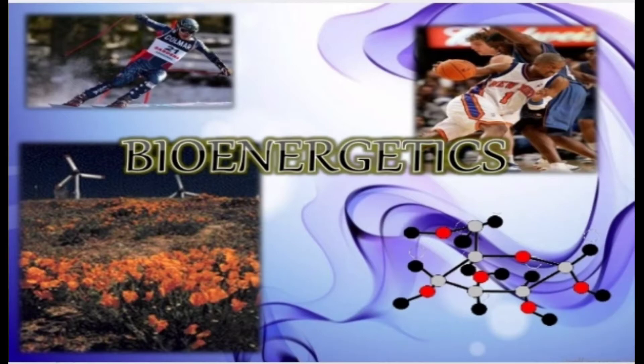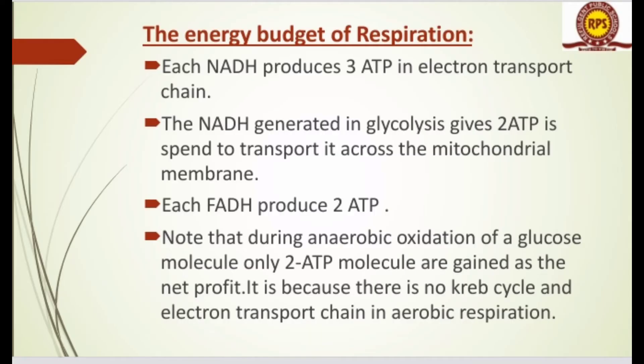So students, this is the energy budget of respiration — the overall calculation of aerobic and anaerobic respiration. Each NADH produces three ATP in the electron transport chain. As previously discussed, every NADH molecule becomes three ATP. The NADH generated in glycolysis gives two ATP because it is spent to transport it across the mitochondrial membrane.